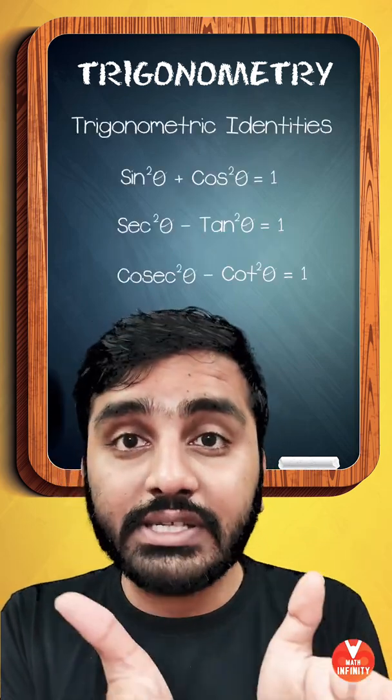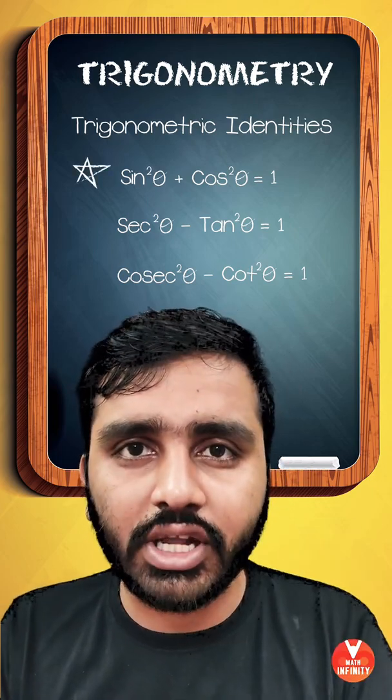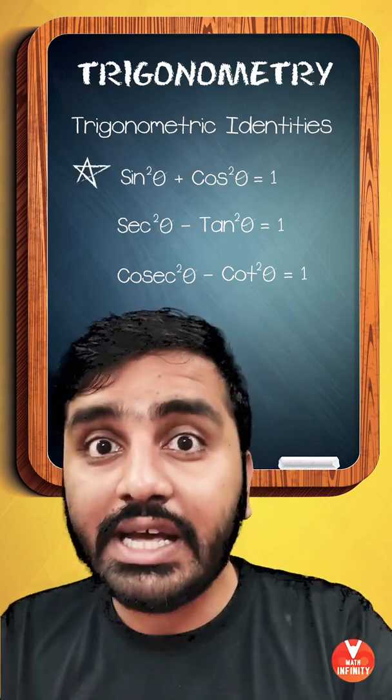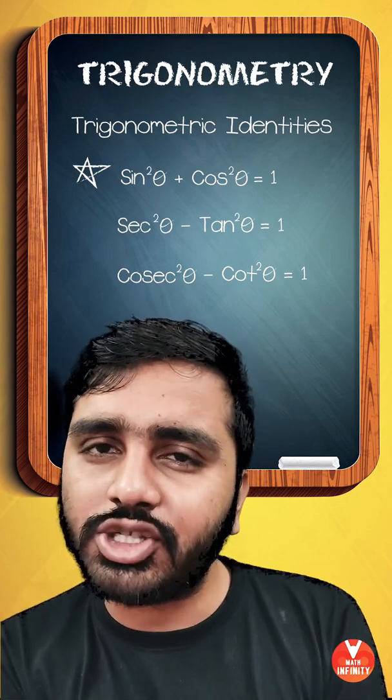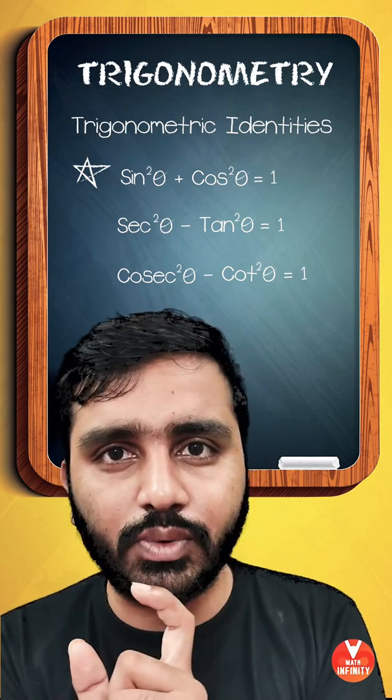Some trigonometric identities where sin²θ + cos²θ has special mention: sin²θ + cos²θ equals 1, sec²θ - tan²θ equals 1, and cosec²θ - cot²θ equals 1.